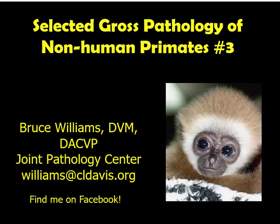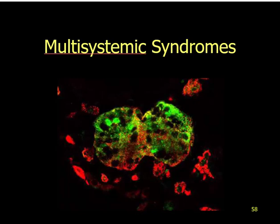Hello, it's Bruce Williams again, and it's time for lecture number three in my series on the gross pathology of non-human primates. Today we're going to finish up on the multisystemic syndromes, or syndromes that routinely affect a predictable and wide array of organs. Lecture one covered the herpes viruses, lecture two covered immunosuppressive diseases, and lecture three is going to cover a couple of other syndromes — amyloidosis and fatal fasting syndrome in macaques. This should be a much shorter lecture than the other two.